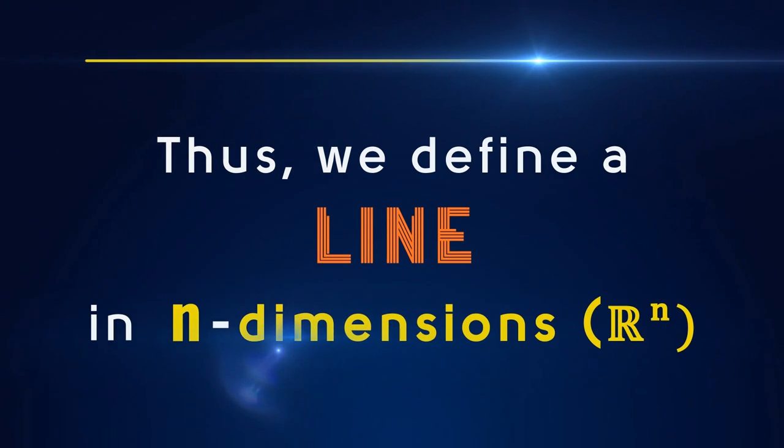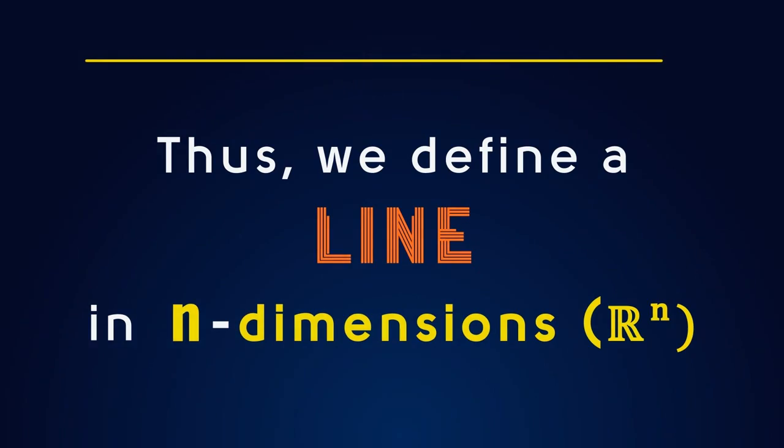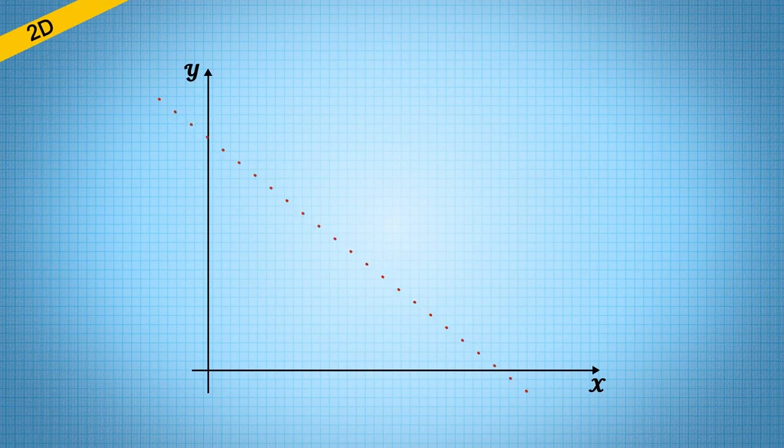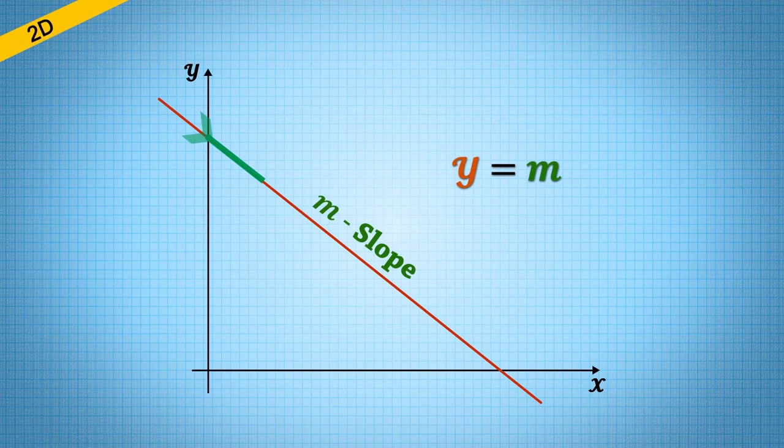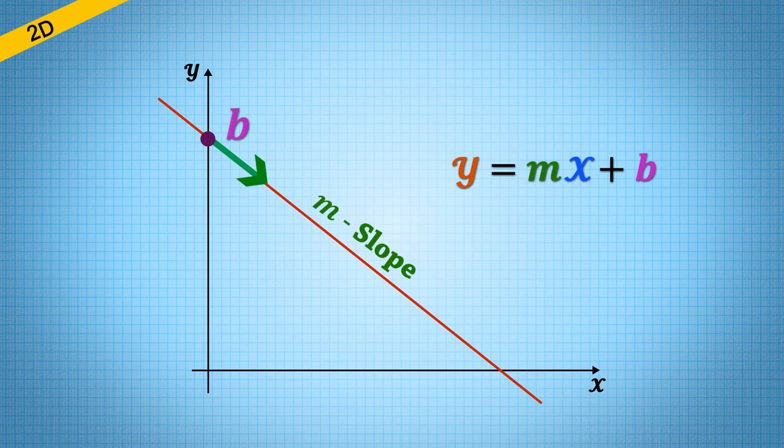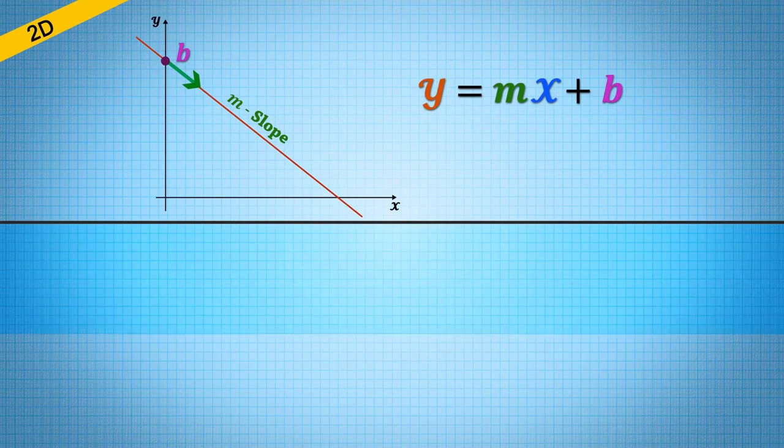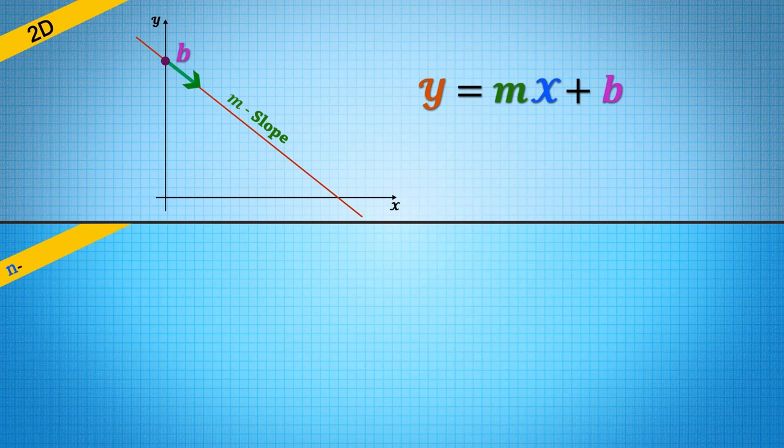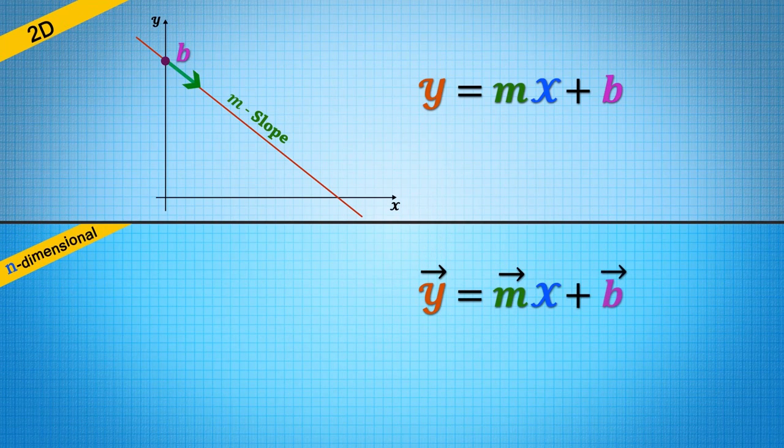Again we cannot visualize higher dimensional lines. Thus we define a line in n dimensions. Looking at the 2D formula for a line, we make a guess that the equation for the n dimensional case is y equals mx plus b.